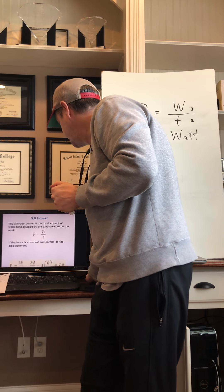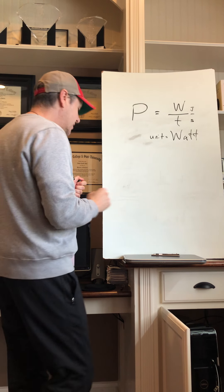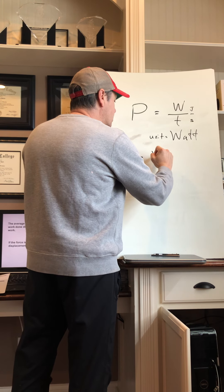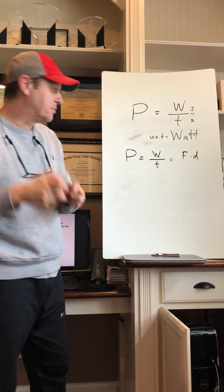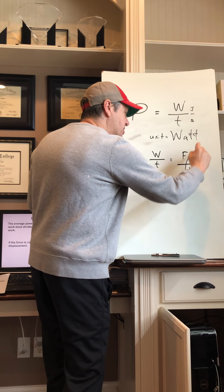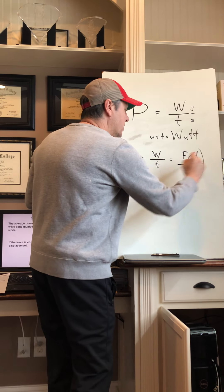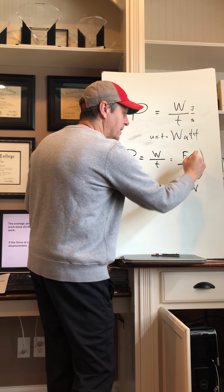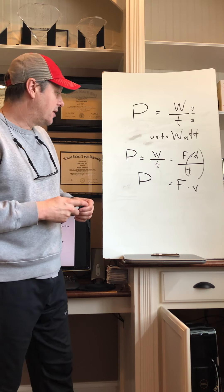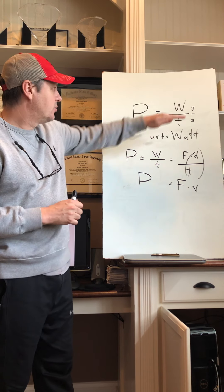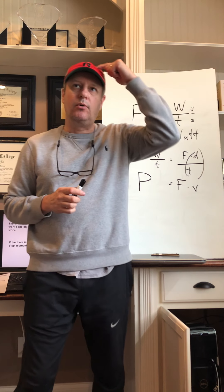However, if the force is constant and parallel to the displacement, that's work. So if power is work over time, and work is force times displacement, then: force times displacement over time — and displacement over time is velocity, one of the very first formulas we learned. So power can also be expressed as force times velocity, also measured in watts. So there are two formulas for power: work over time, and power equals force times velocity.